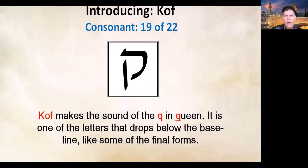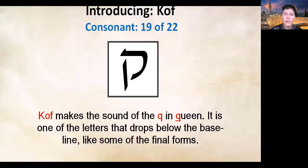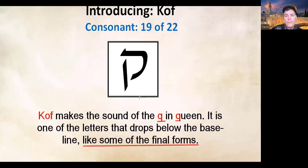The next letter is the 19th letter of the alefbet. We are approaching the end — only 22 letters total — and this is exciting because once we finish we'll graduate from the alefbet program and begin the next pre-module: learning the 16 essential drills. Consonant number 19 is pronounced kof. Kof makes the sound of the Q in 'queen.' It is one of the letters that drops below the baseline, though it is not a final form letter.